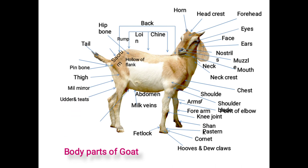Then the udder and teats, also known as the mammary gland. The complete udder has four quarters, which is absent in the goat having only two teats.